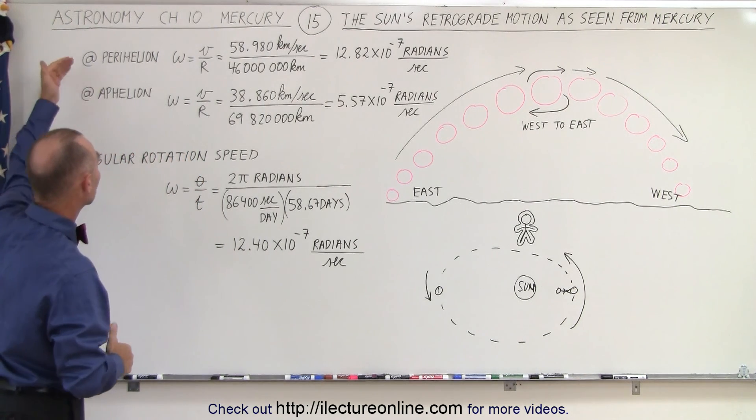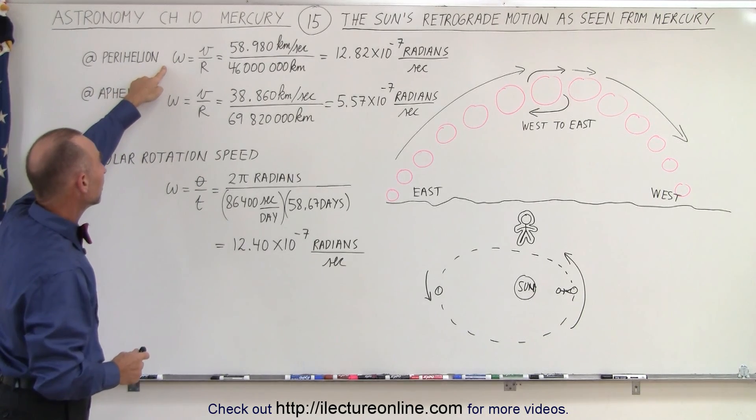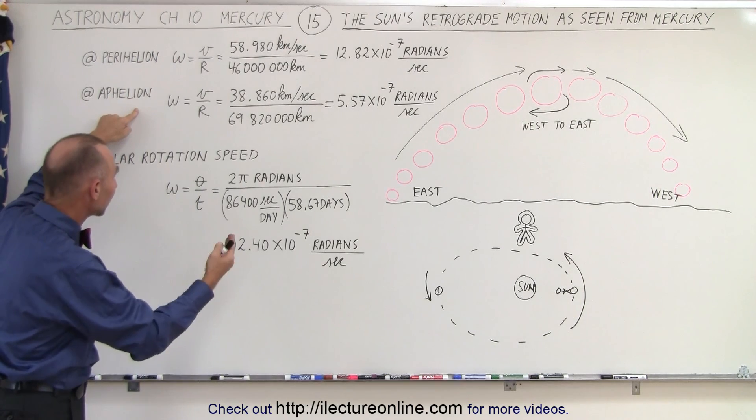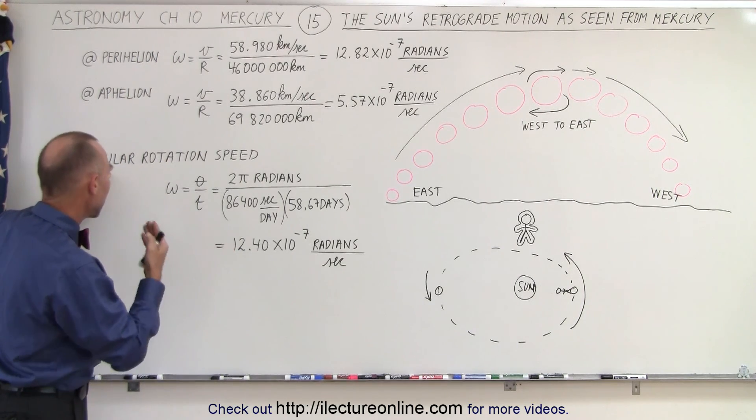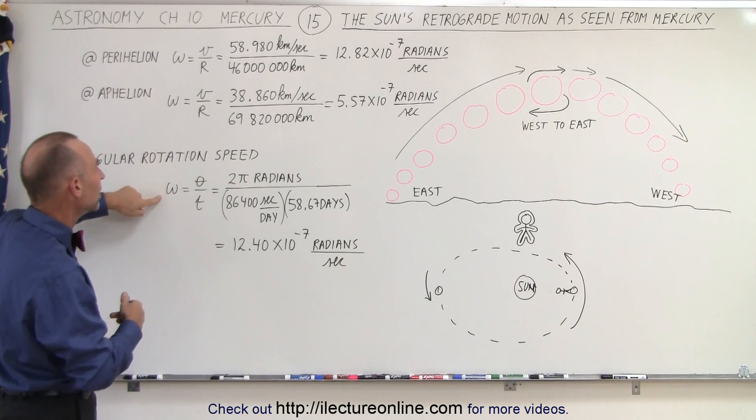Here we've calculated the three angular velocities: one at perihelion when it's closer to the Sun, one at aphelion when it's farther from the Sun, and the angular rotational speed.